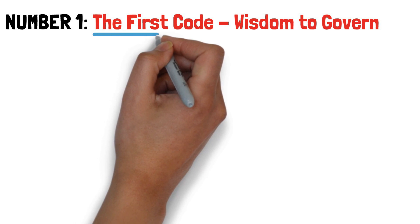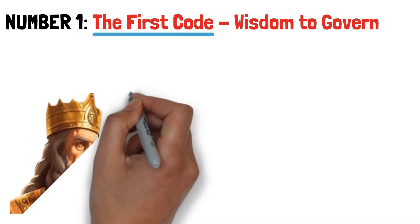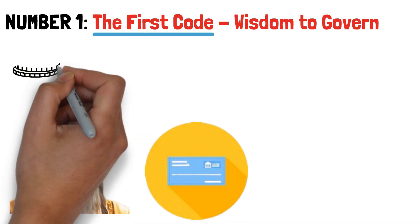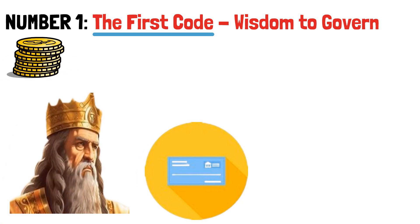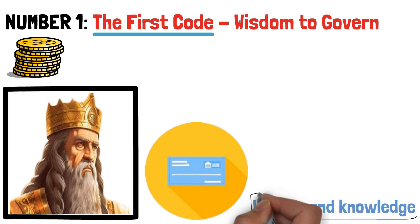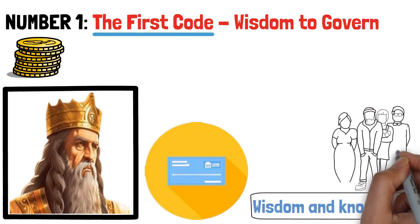The first code Solomon tapped into was wisdom. Picture this. God appears to Solomon in a dream, essentially offering him a blank check for anything he desires. Instead of requesting vast riches or worldly possessions, Solomon makes a remarkably insightful choice. He requests wisdom and knowledge, not for personal gain, but to effectively lead and govern his nation.